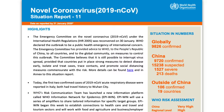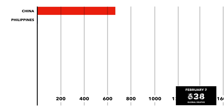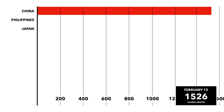This changed just two days later on February 2nd, when the Philippines experienced their first fatality. But the Philippines' death toll stayed at one for weeks, while China continued to see their tally rise — so fast, in fact, that you can't actually see the Philippines bar.